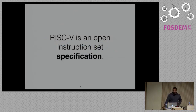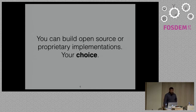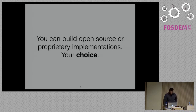Some of the other ISAs you may be familiar with are x86, ARM, Power, Alpha, and MIPS. RISC-V, unlike them, is actually an open specification. You can build open source or proprietary RISC-V implementations — it's completely up to you. It's an open standard and you can do what you want with it. If you tried to do this with one of the commercial ISAs such as ARM or x86, you might get a friendly — maybe not so friendly — letter from one of their lawyers.